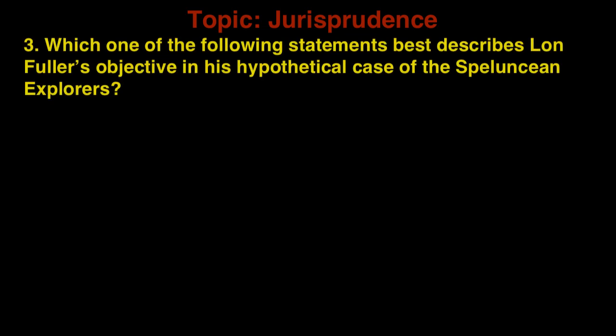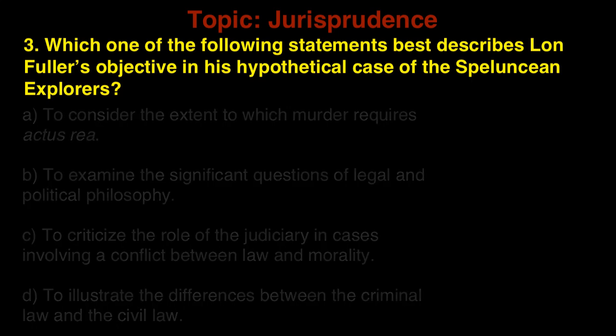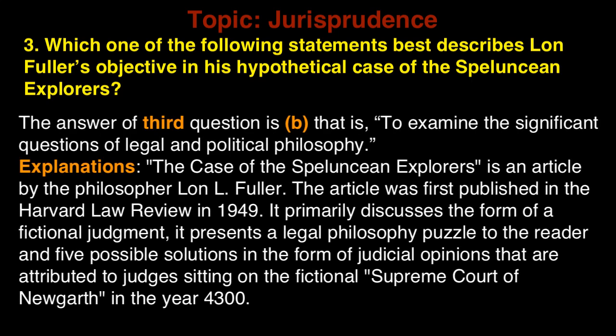Question 3: Which one of the following statements best describes Lon Fuller's objective in his hypothetical case of the Speluncean Explorers? A. To consider the extent to which murder requires actus reus. B. To examine the significant questions of legal and political philosophy. C. To criticize the role of the judiciary in cases involving a conflict between law and morality. D. To illustrate the differences between criminal law and civil law. The answer is B — to examine the significant questions of legal and political philosophy.